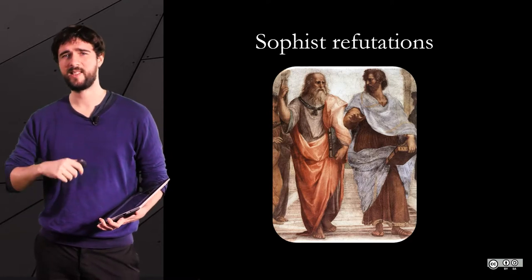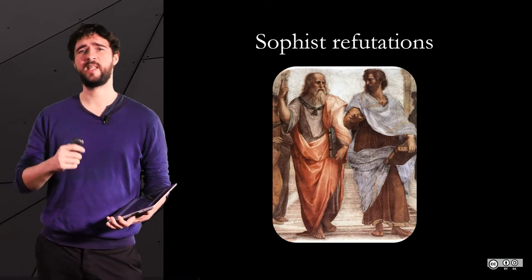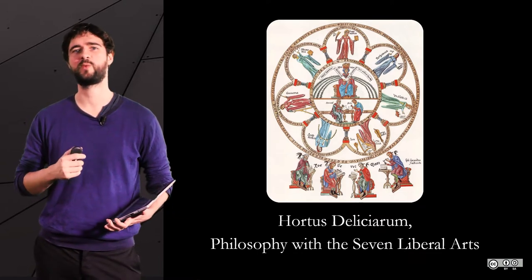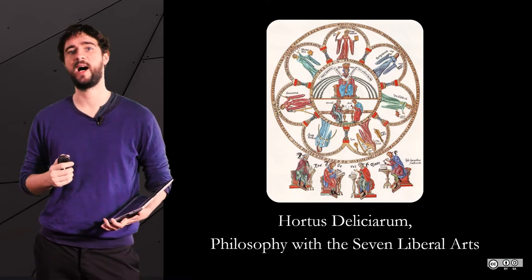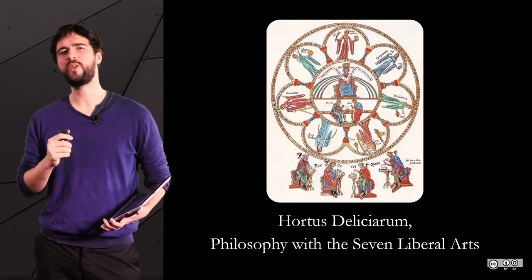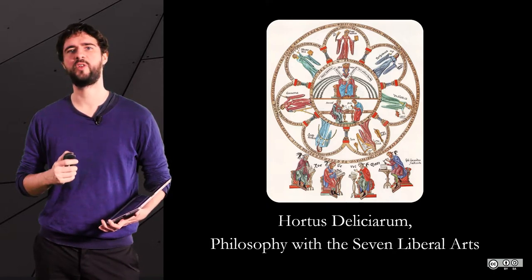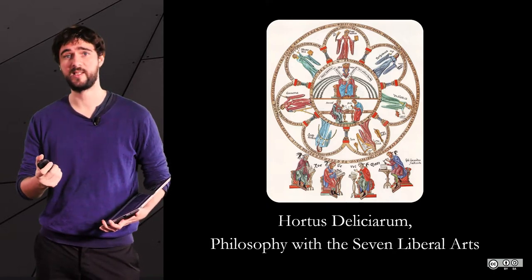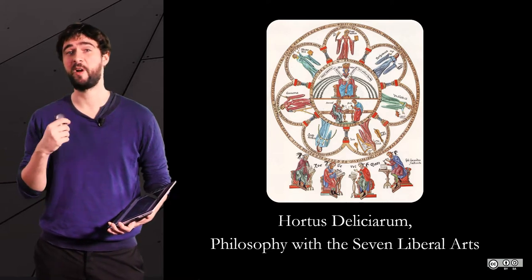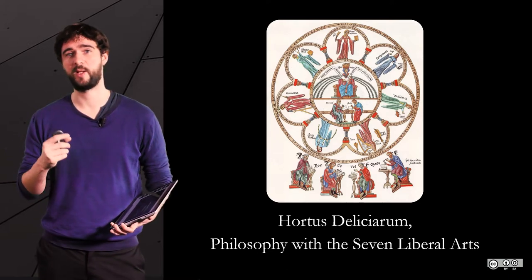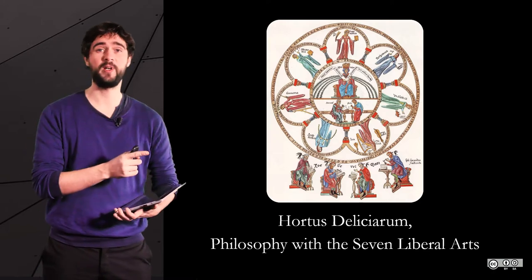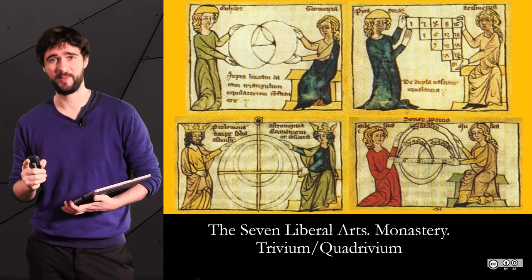During antiquity and the Middle Ages, the identification of fallacious reasoning was taught in what was referred to as the trivium. The oldest curricula of European universities and monasteries were composed of the seven liberal arts, divided into the quadrivium and the trivium.